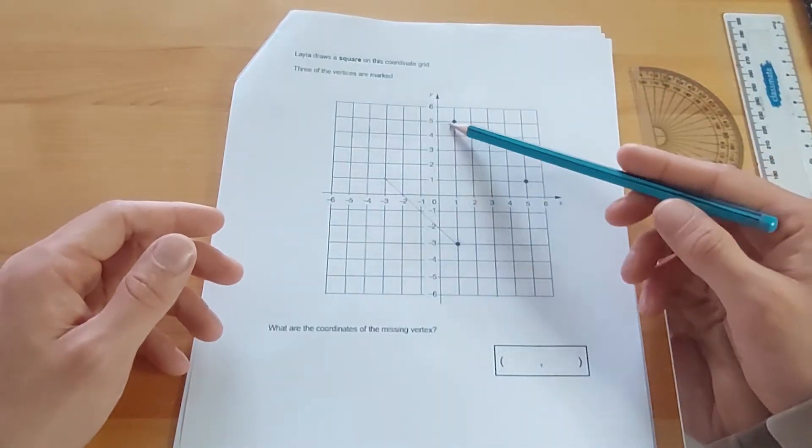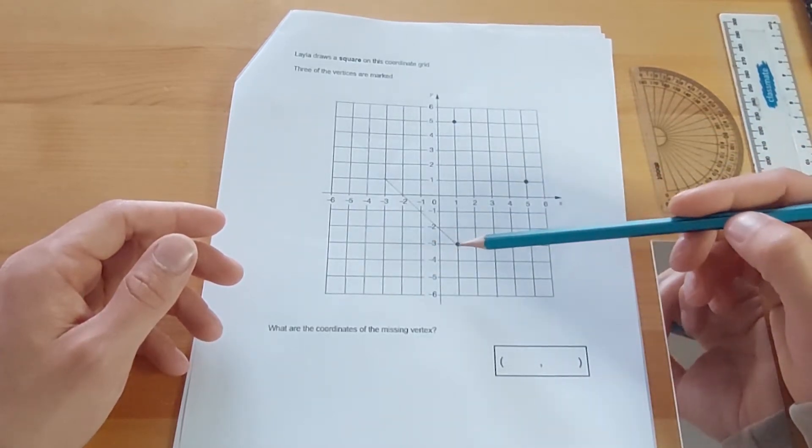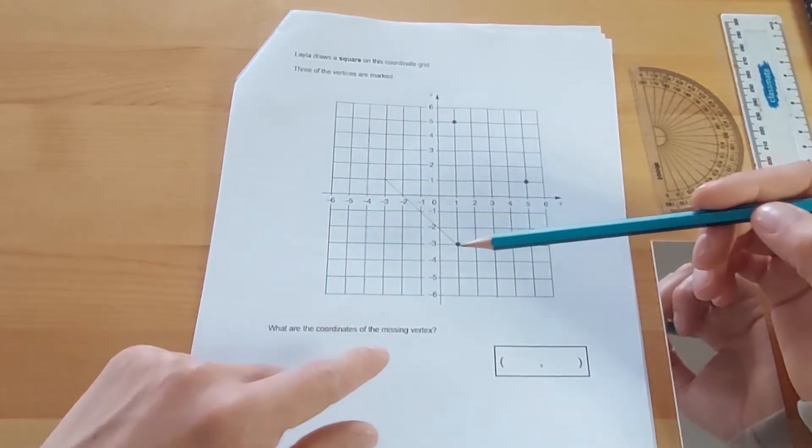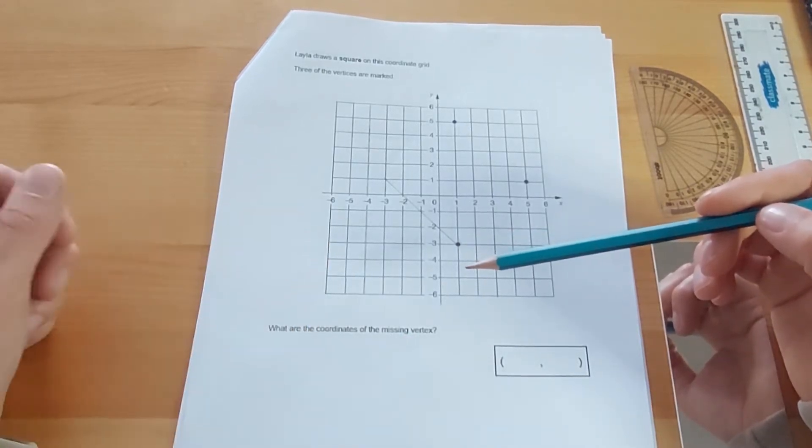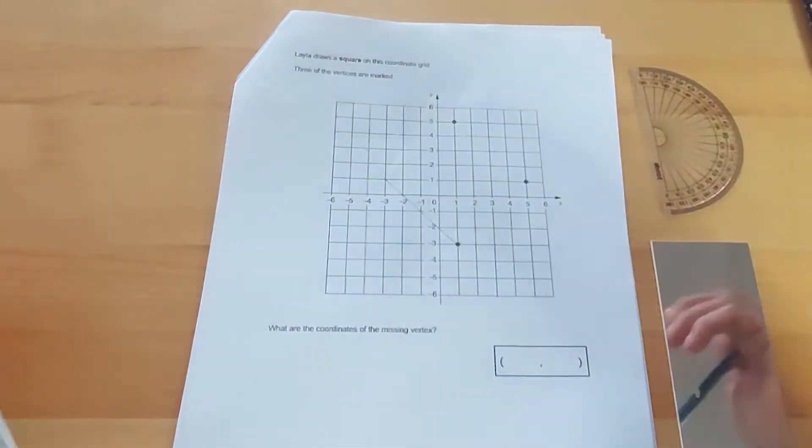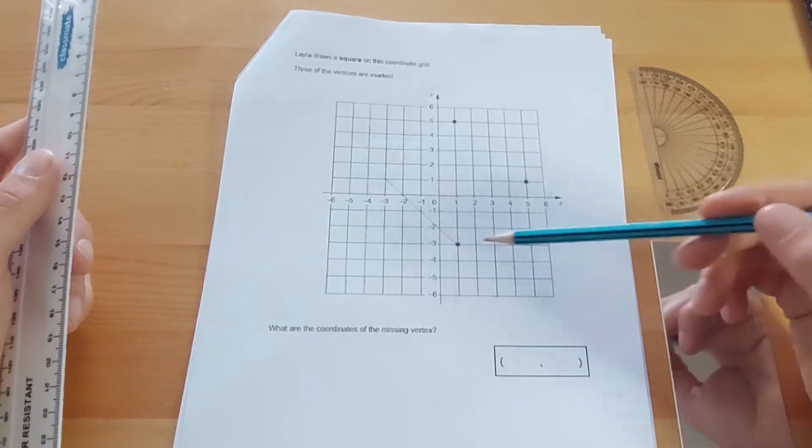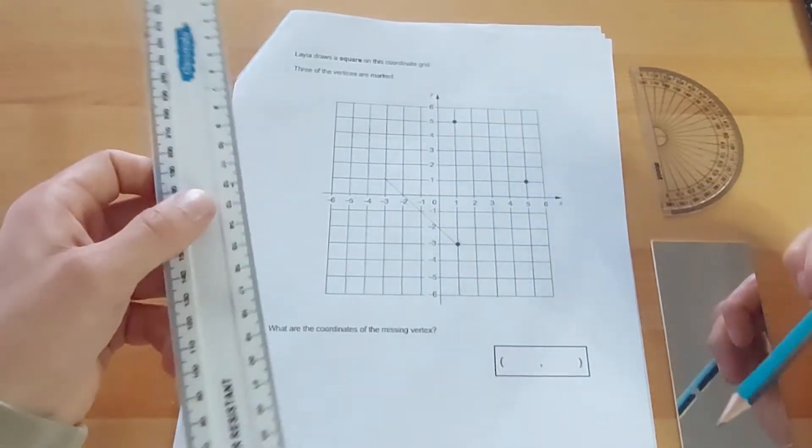You can see there's one corner there, one corner there, and one corner there that have been marked on the grid. What are the coordinates of the missing vertex? Vertex means one corner. So we need to work out where the missing corner would go. Now, it's a square, this shape, so we know that information. So when we join up all of the dots, it should make a square. So what's the distance between each of these dots?